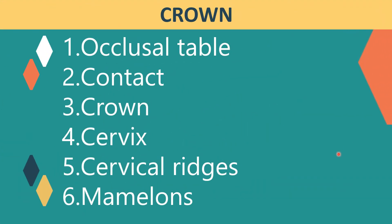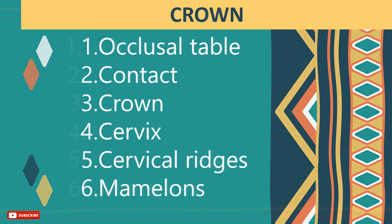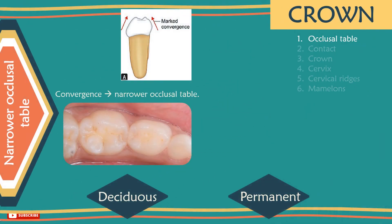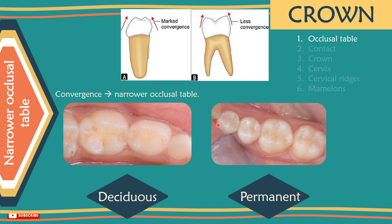Now we compare the crown differences. Number 1 – Occlusal table: there is greater convergence of the buccal and lingual walls of primary molars, resulting in a proportionally narrower occlusal table, unlike permanent teeth where the occlusal table of the molars is much wider. This is more pronounced in the Ds than Es; therefore, overextension of an occlusal cavity bucco-lingually can lead to cusp weakening.